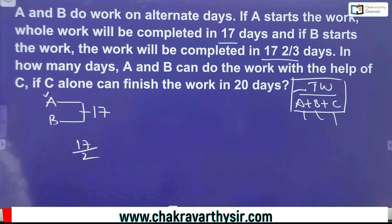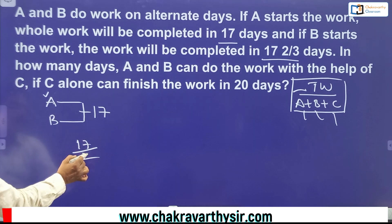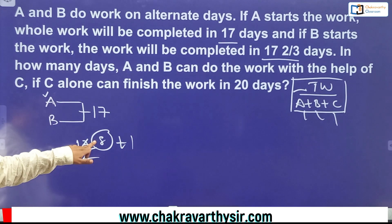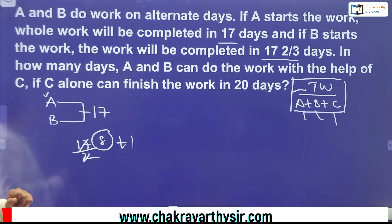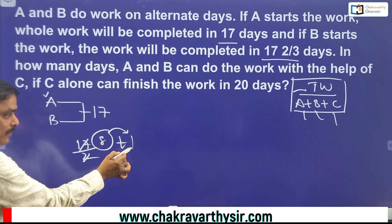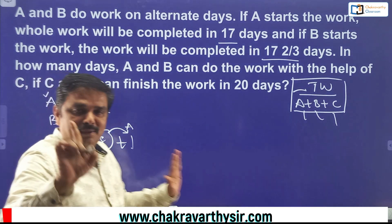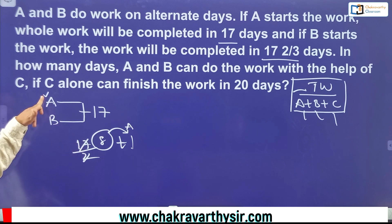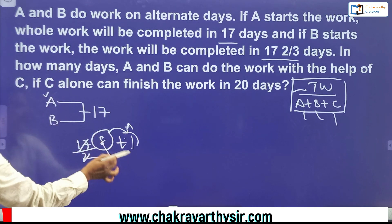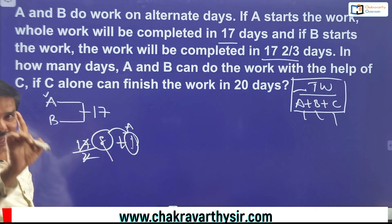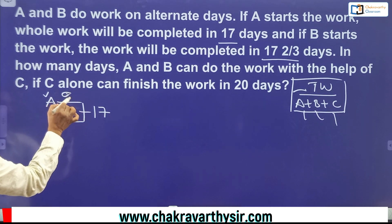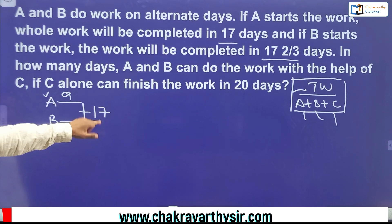Bifurcating 17 days: both A and B work 8 days each alternately. Since A started, the remaining one day also goes to A. So clearly, A worked for 9 days and B worked for 8 days — total 17 days. This is Case 1.